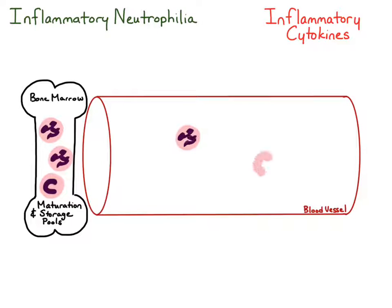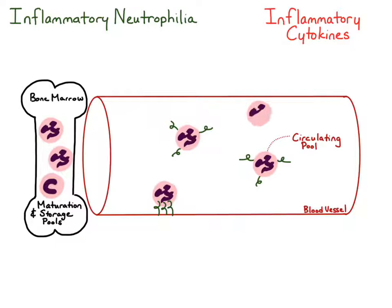Within the blood vessel, there are free-flowing neutrophils within a circulating neutrophil population. These neutrophils have cell adhesion molecules which allow them to either transiently adhere to the endothelium or undergo migration into the tissues. When they're transiently adhered to the endothelium, they're called the marginal pool of neutrophils.